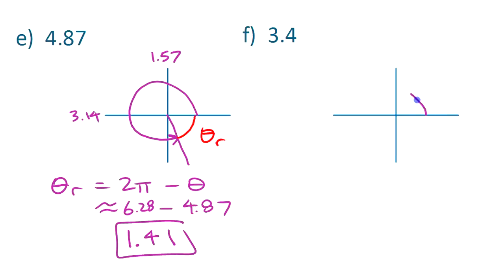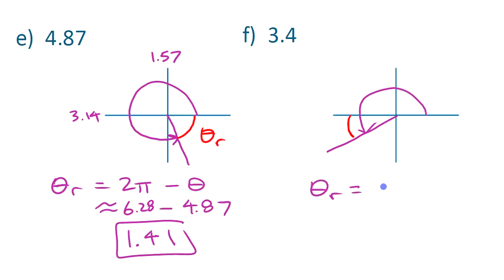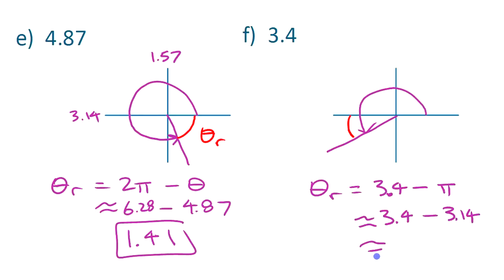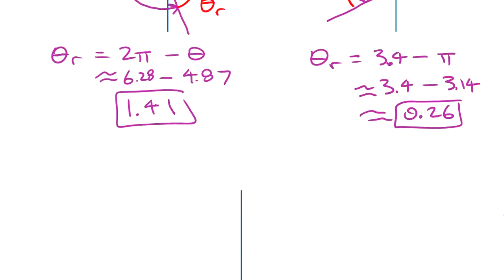The last example: 3.4 is going to be somewhere in quadrant three, just a little past pi, since pi is about 3.14. The reference angle is that small angle between the terminal arm and the x-axis. To find it, we take our angle 3.4 and subtract pi: 3.4 minus 3.14, which gives us approximately 0.26 as the reference angle.